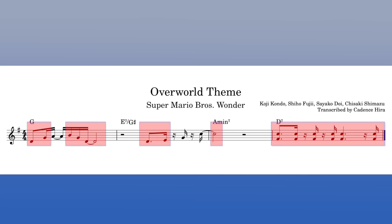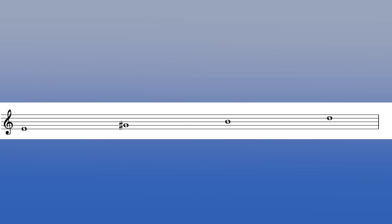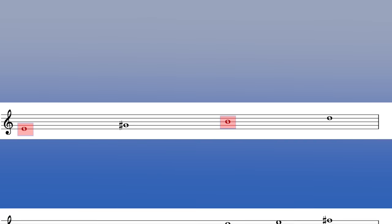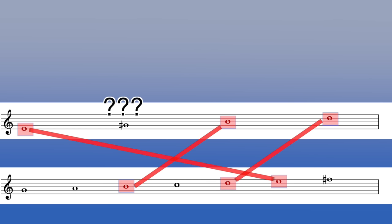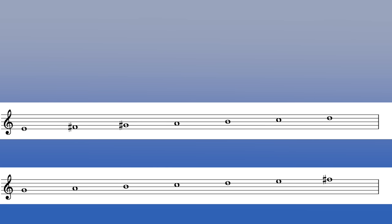Chord scales also serve a purpose when something isn't found in the key signature. Let's look at the E7 chord we skipped earlier. The chord tones are E, G sharp, B, and D. Of these, E, B, and D are diatonic to G major, but G sharp is nowhere to be found. That's fine — this chord is a slightly jazzier one that sets up the next chord, and that G sharp is an important part of that. Filling in the gaps with diatonic notes gives us the E Mixolydian flat 13 scale. With that, our four chord scales are done, and we can use them over the Mario Wonder track and it'll sound great.